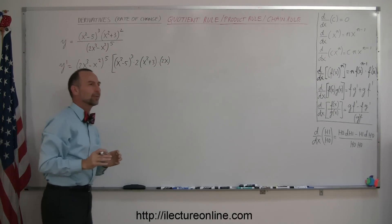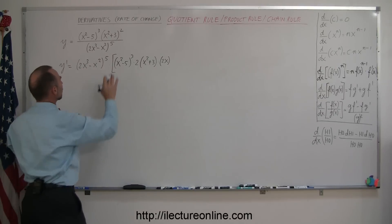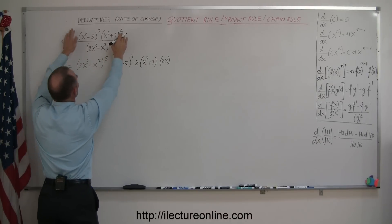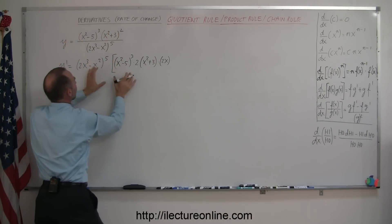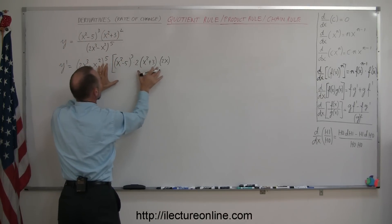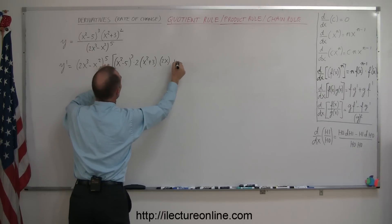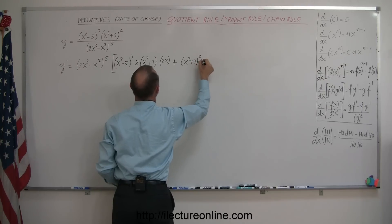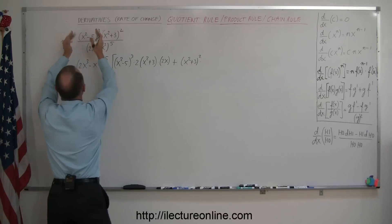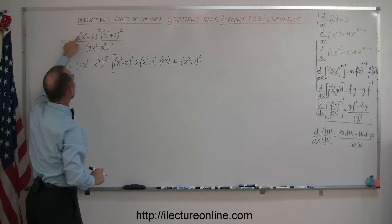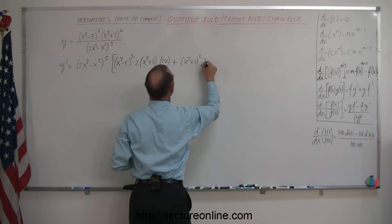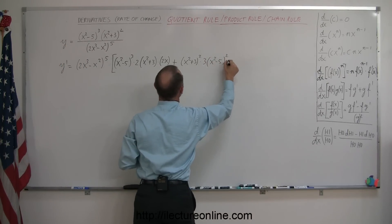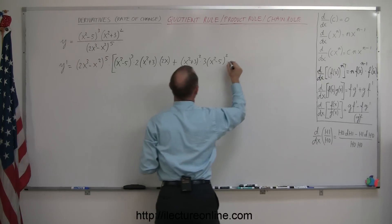Now you may say, oh I'm getting lost here. So we were using the quotient rule — we took the denominator times the derivative of the numerator. That was a product, so we took the first times the derivative of the second, plus the second — x squared plus 3 to the second power — times the derivative of the first. So then we use the chain rule, so that means 3 times x squared minus 5 to the second power, times the derivative of what's inside, which is 2x.